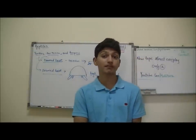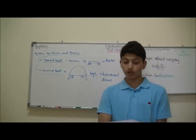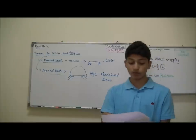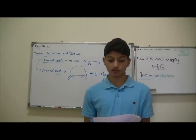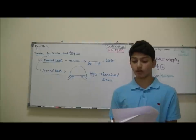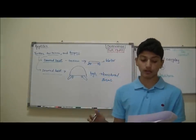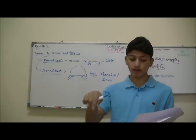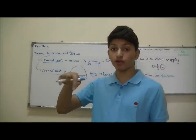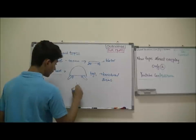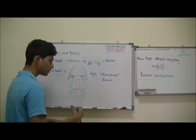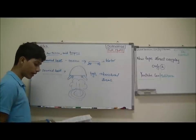Most lizards are carnivores, meaning they only eat animals, not plants. Some species hunt down insects, but large species such as the Komodo dragon prey on mammals. Some species such as iguanas are strict herbivores — they do not eat meat and only eat plants. Snakes are a group of legless lizards and all snakes are predators. Some snakes kill their prey by constriction, wrapping their body around the prey and squeezing it, like an anaconda — they wrap around and crush the animal before swallowing it.